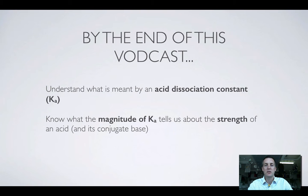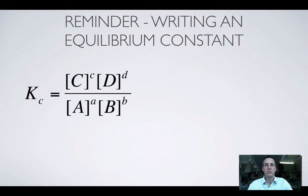And you'll be able to look at the size of Ka, the acid dissociation constant, and decide how strong or weak an acid must be. So before we really get going, let's have a quick reminder of what equilibrium constants look like, because this was covered in another topic.